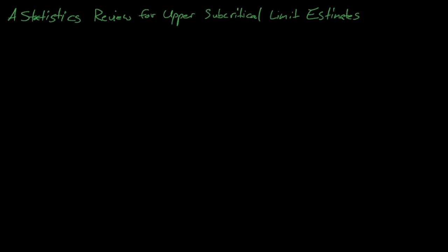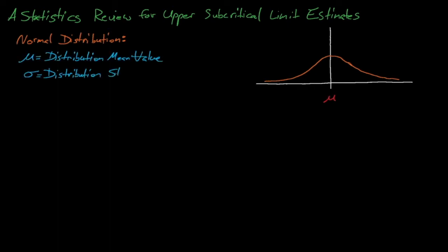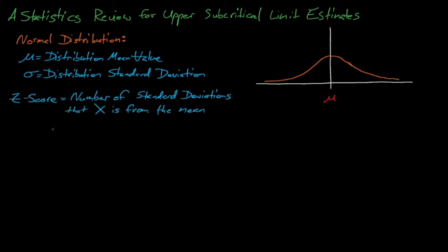We'll begin our dive into statistics by discussing normal distributions. Samples that are drawn independently with some random error will generally follow the shape of a normal distribution, where mu is the mean value for that distribution and sigma is the standard deviation. If we draw some random sample from a normal distribution, which we'll call x, then the z-score for x describes how likely or unlikely it is to sample some specific x, where z equals x minus the distribution's mean value, all divided by sigma. In other words, z describes how many standard deviations the randomly sampled x value is from the mean of the distribution.